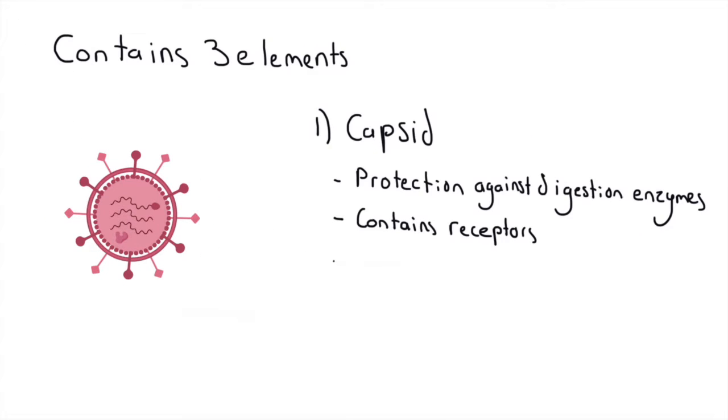A virus contains three things. The first one is what we call a capsid. It's basically the virus's protection, and it's what you see on the outermost layer of the virus on the screen. This capsid has three functions. The first one is protection against digestion enzymes—for those who don't know, these are basically little proteins that cut DNA.